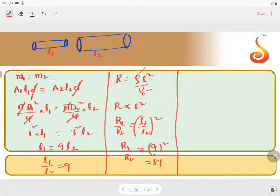Now when they are connected in series, when they are connected in series, current will be same. Now the ratio of heats produced,